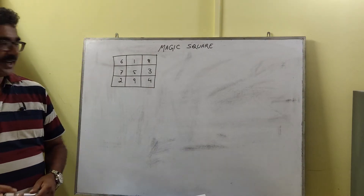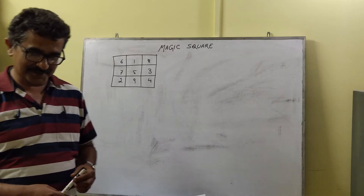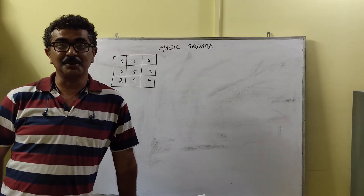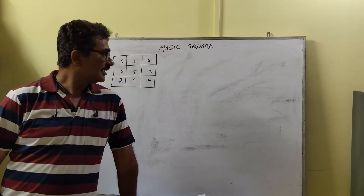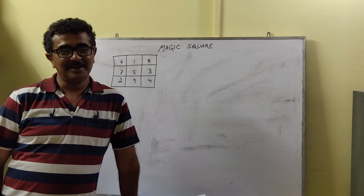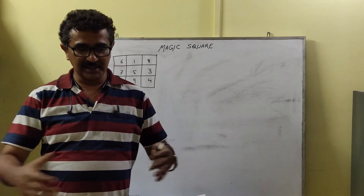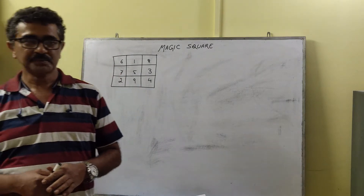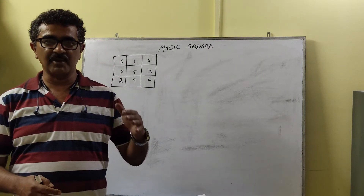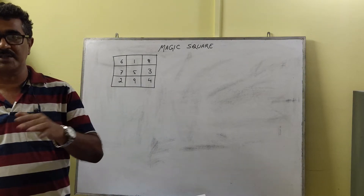Welcome back. Today I am going to discuss about magic square. This is a very interesting topic, generally within computer science. What actually is a magic square? It is a matrix — a 2D matrix — where the sum of each row, column, and diagonals are always equal.